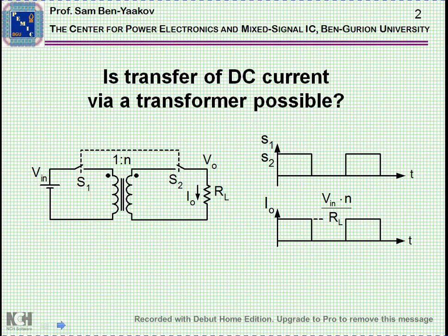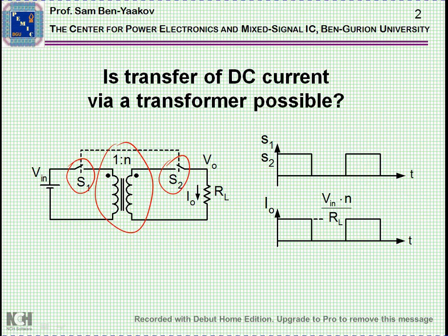Well, this is not strictly correct. You can transfer DC current through a transformer if you use some switching arrangement. I'm showing here a case in which you have a transformer with two switches, S1 and S2, which are turned on simultaneously. As they are turned on, VIN is imposed on the primary. You'll get an output voltage depending on the turn ratio of the transformer.